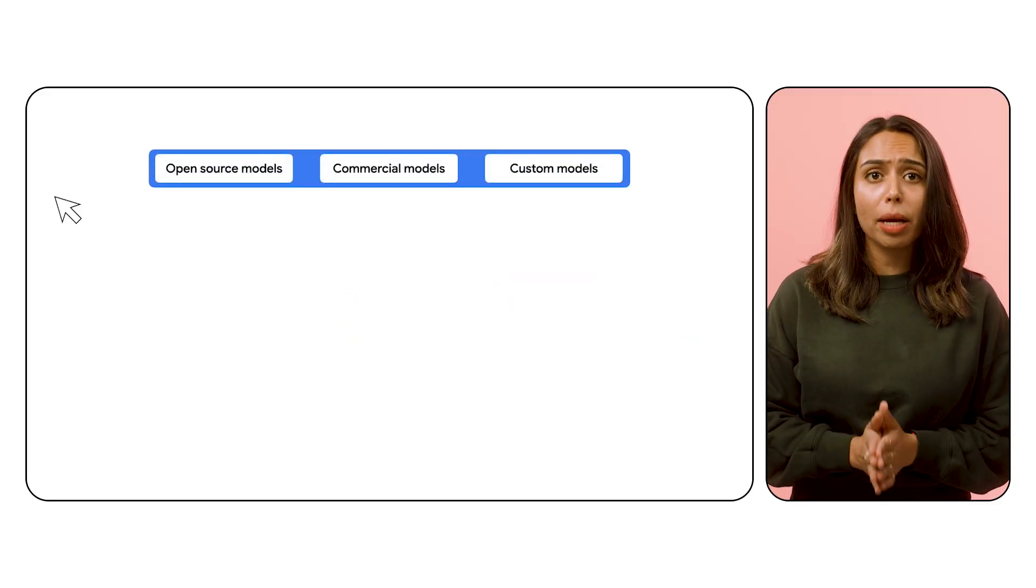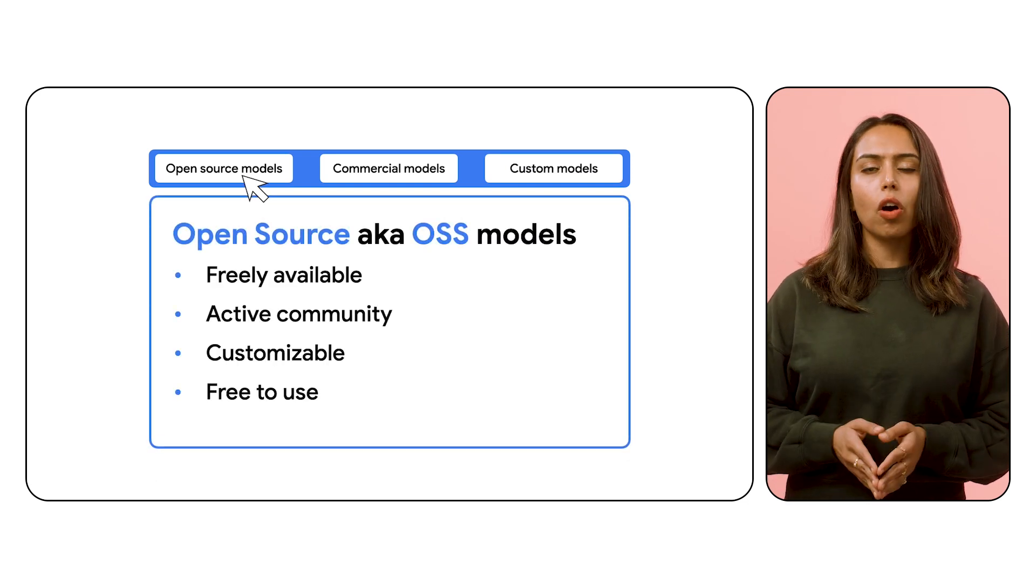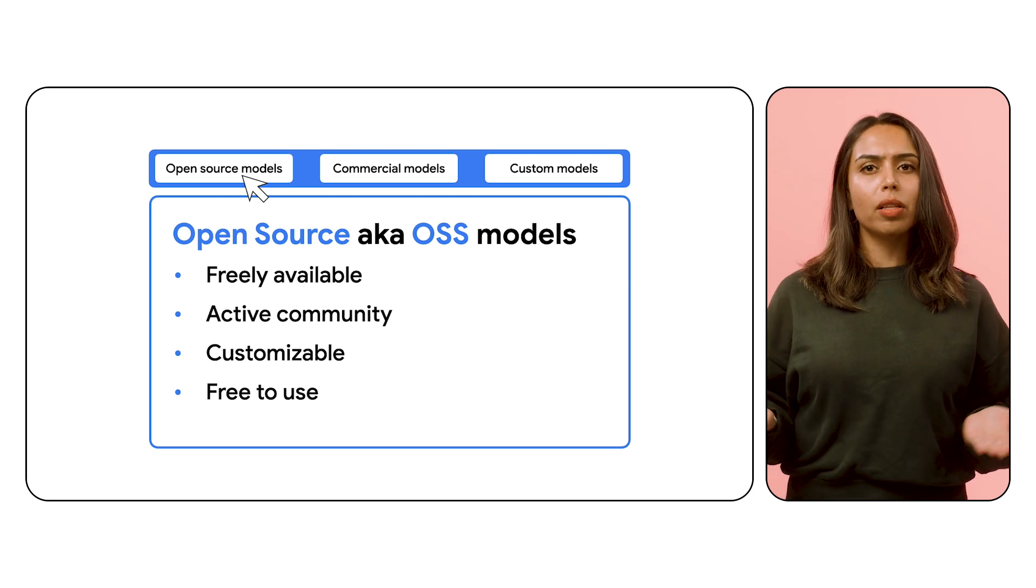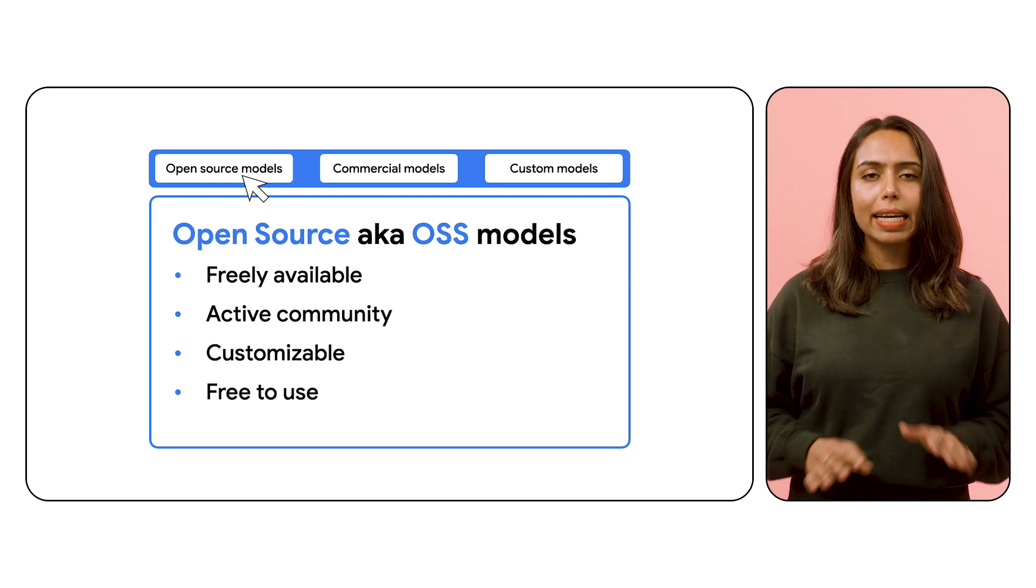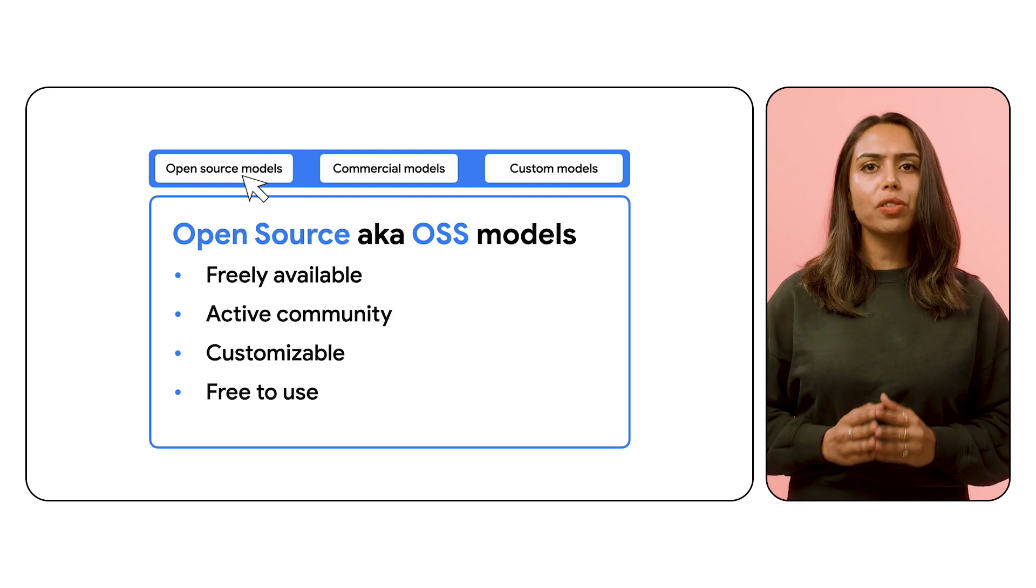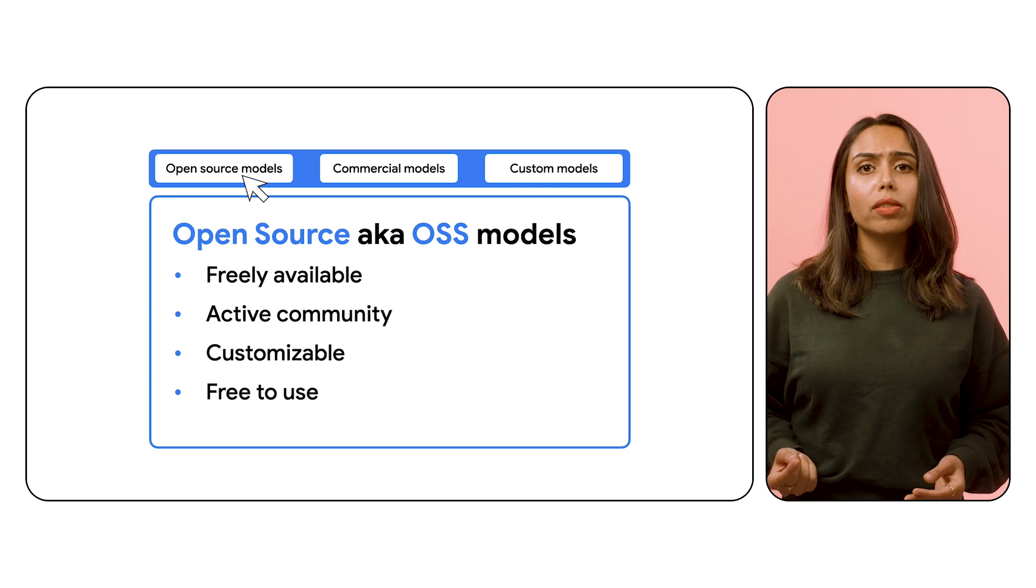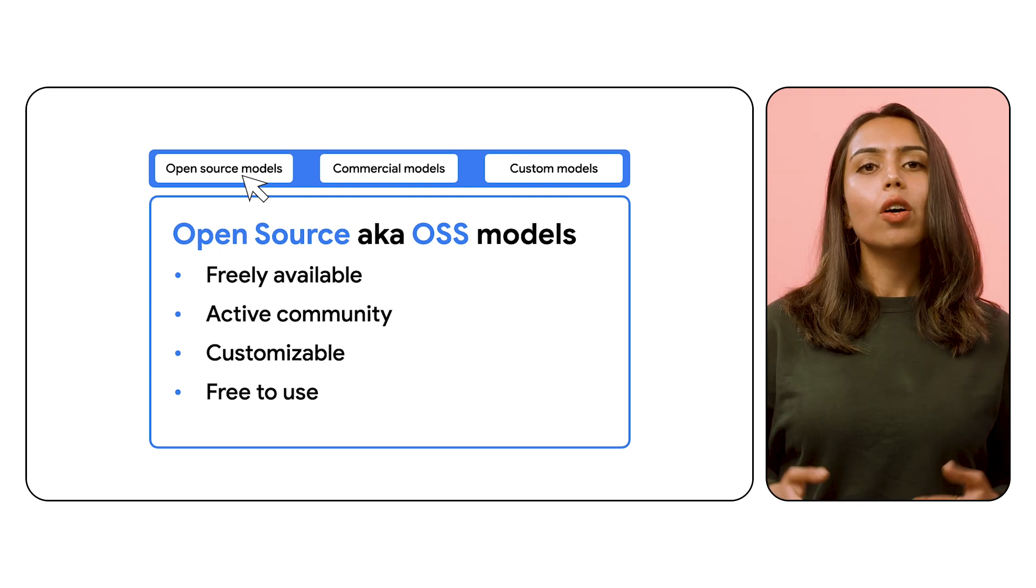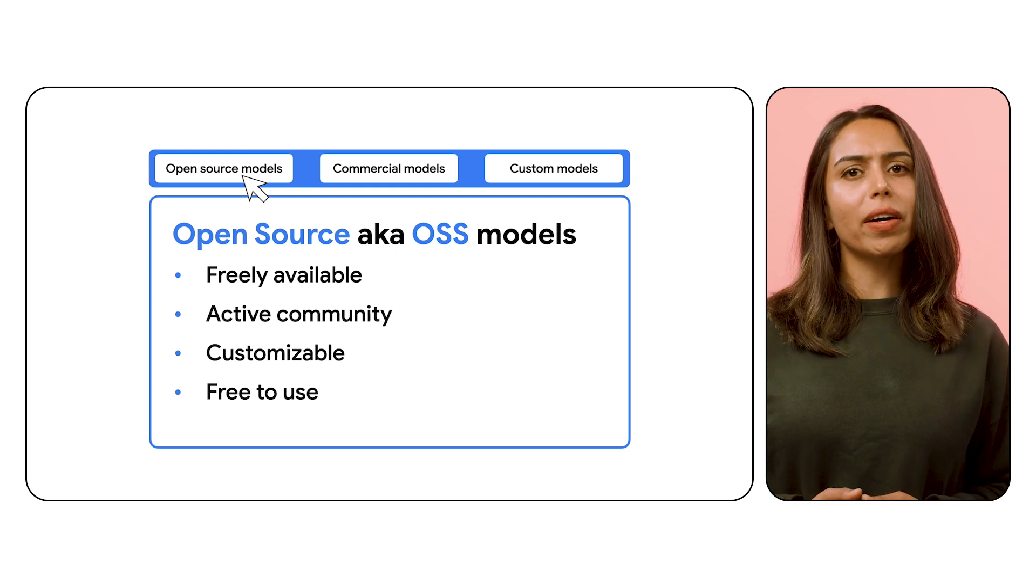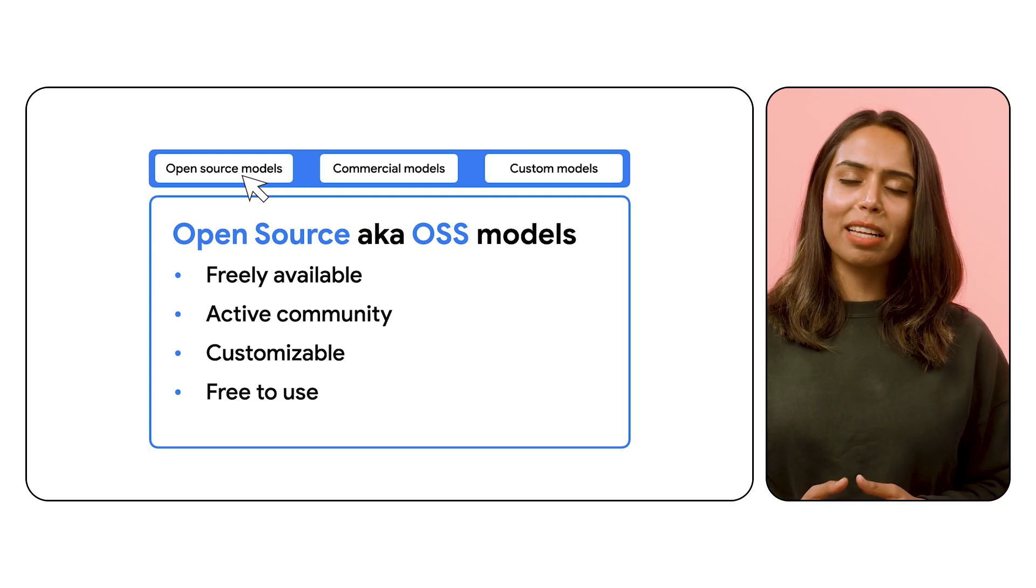Open-source models like Gemma and those available through TensorFlow Hub or Hugging Face offer freedom and flexibility. They are freely available, often backed by large communities, and highly customizable. This makes them attractive for organizations seeking cost-effectiveness and the ability to tailor models to their specific needs. With all of the freedom and flexibility of the open-source models, they do require a larger level of technical expertise to deploy, integrate, and maintain.